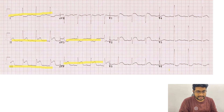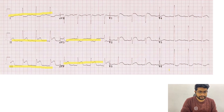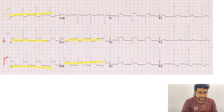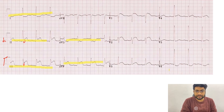Let's discuss the criteria for labeling RV infarct on a standard ECG. There are three criteria. The first is that the elevation in lead 3 should be more than the elevation in lead 2. We can see that the elevation in lead 3 is almost 5 small blocks compared to the elevation in lead 2 which is almost 3 small blocks, so our first criteria is fulfilled.